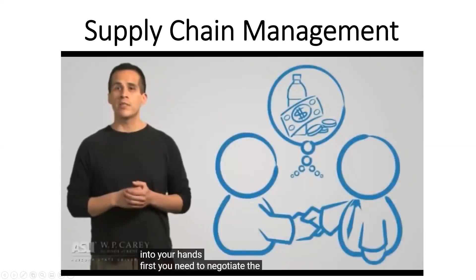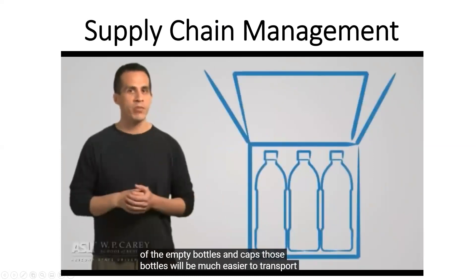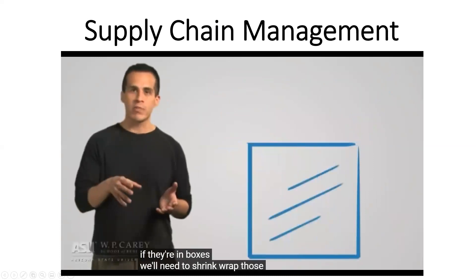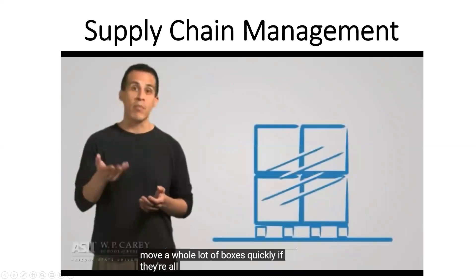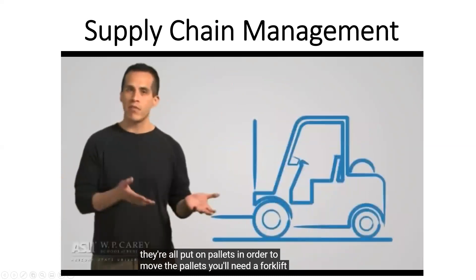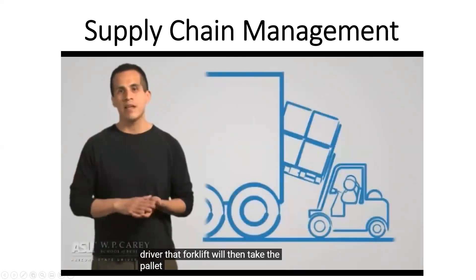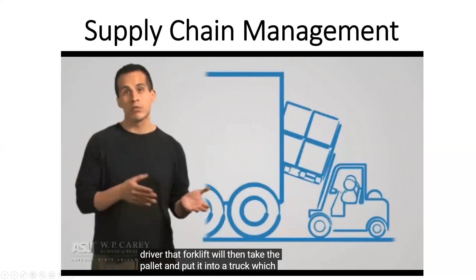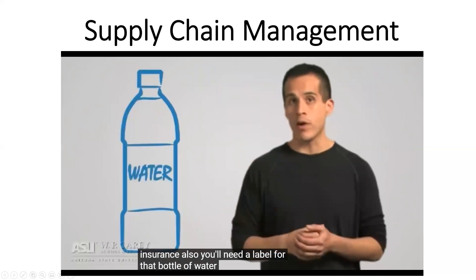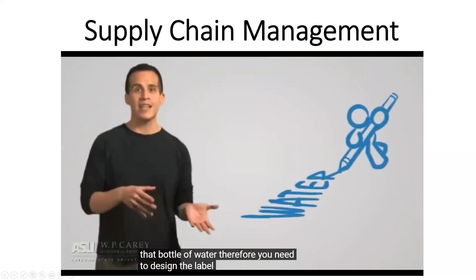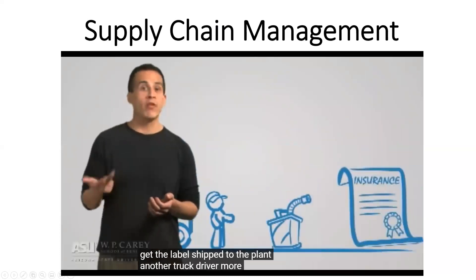First, you need to negotiate the purchase of the empty bottles and caps. Those bottles will be much easier to transport if they're in boxes, and we need to shrink wrap them so they don't fall out. We can move a lot of boxes quickly if they're all put on pallets. In order to move the pallets, you'll need a forklift, which means you'll need a forklift driver. That forklift will put the pallet into a truck, which will require a truck driver, fuel, and insurance. You'll also need a label for that bottle of water — you need to design the label, print the label, and get the label shipped to the plant: another truck, driver, more fuel, and insurance.